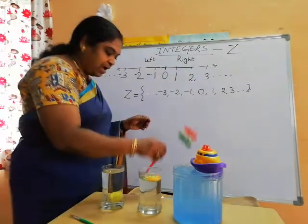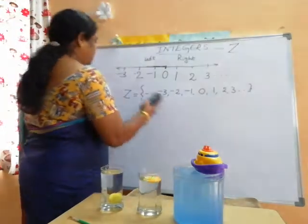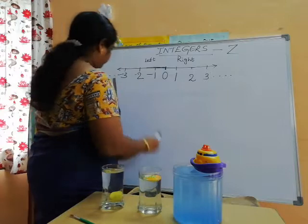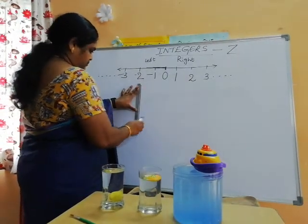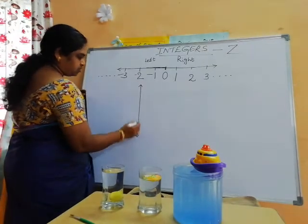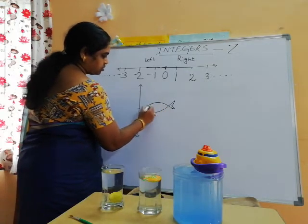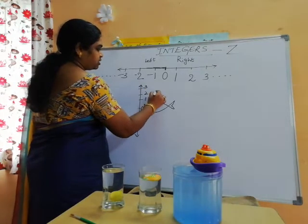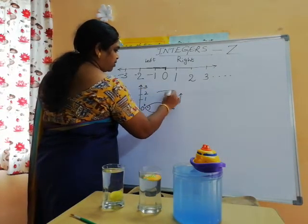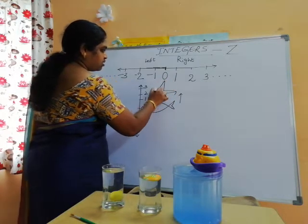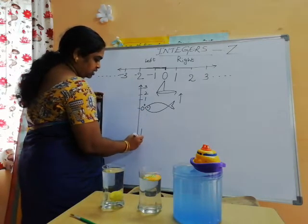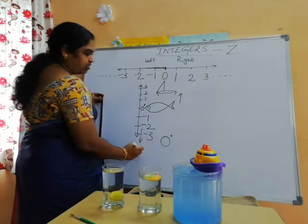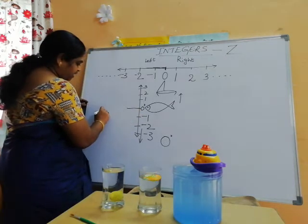I will draw a vertical line now to show again. The fish is floating — that is zero. Our boat above is positive values — above the sea level. Towards downwards, these are negative values: minus 1, minus 2, minus 3. The lemon is inside the water. This is the sea level. We call it sea level.